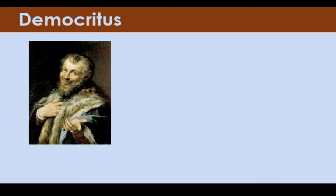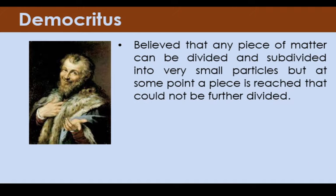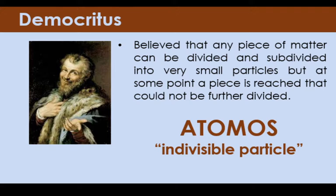Democritus specifically believed that any piece of matter can be divided and subdivided into very small particles. But this process ended at some point when a piece is reached that could not be further divided. He called these particles atomos, a Greek word which means indivisible particle.